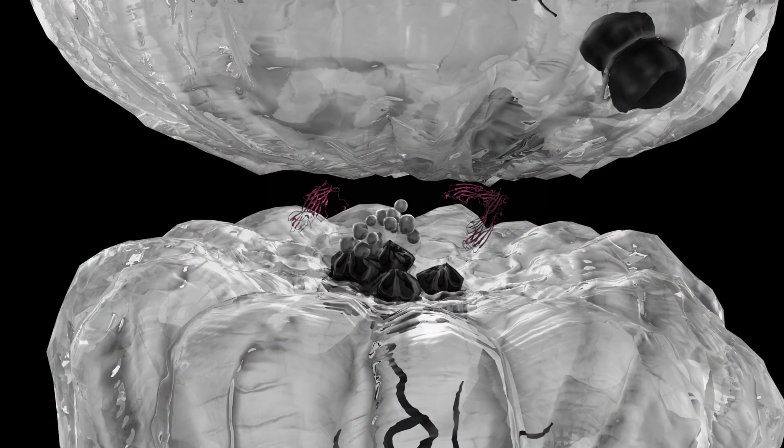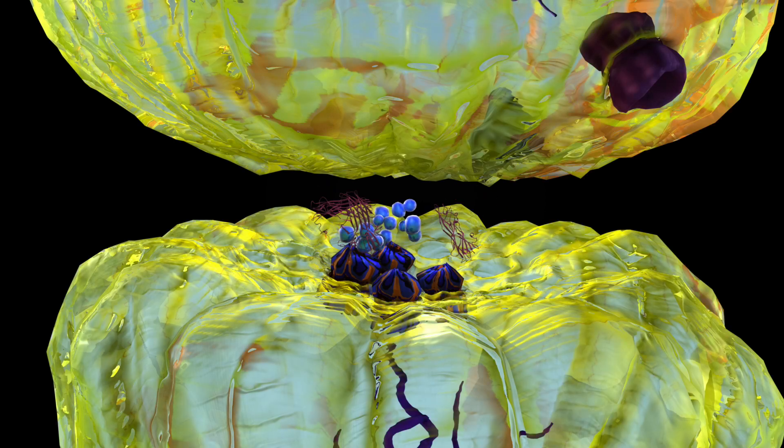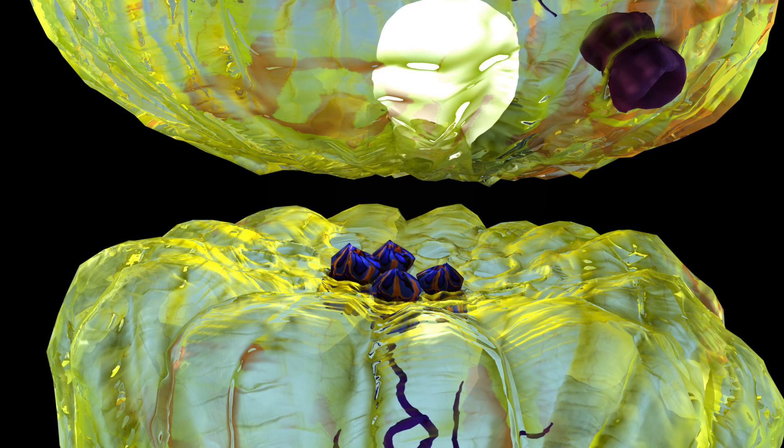This is monoamine oxidase or MAO for short. This enzyme will break down dopamine and keep it from binding to the dopamine receptor.